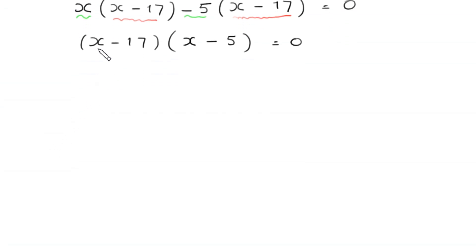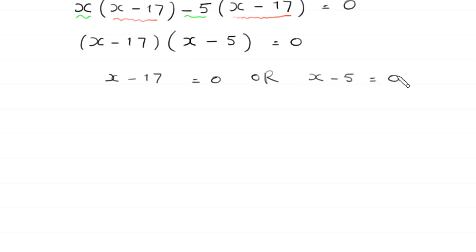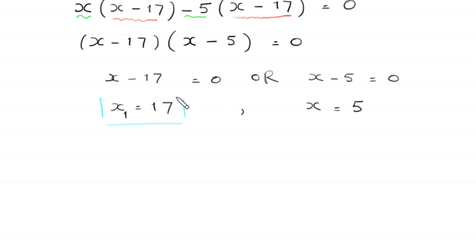From here, either x minus 17 equals 0 or x minus 5 equals 0. So we get two values of x: x₁ equals 17 and x₂ equals 5. Because we solved a radical equation, we must verify these values by substituting them back into the original equation.